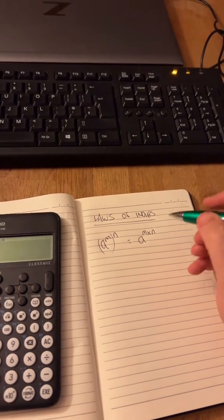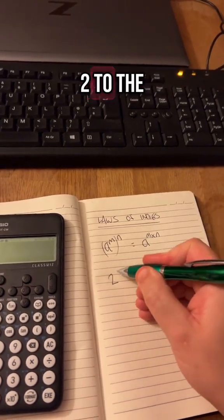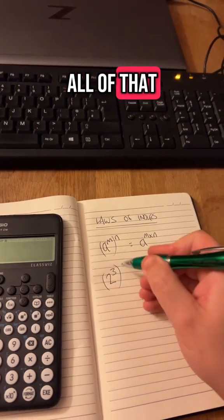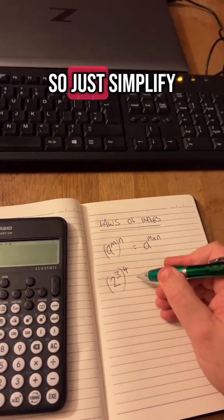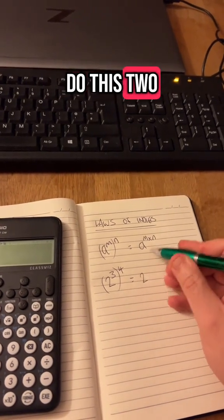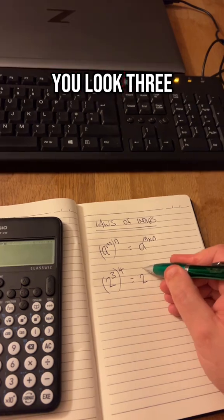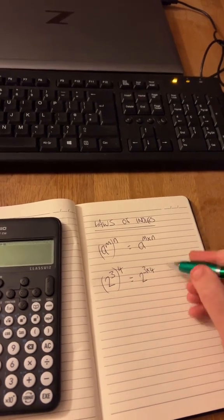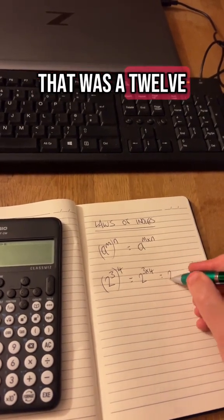Easy as that. I'll put some numbers in: two to the power three, and all of that to the power four. To simplify that we'll just do two and just multiply these two - three times four. In Cardigan school that was 12.